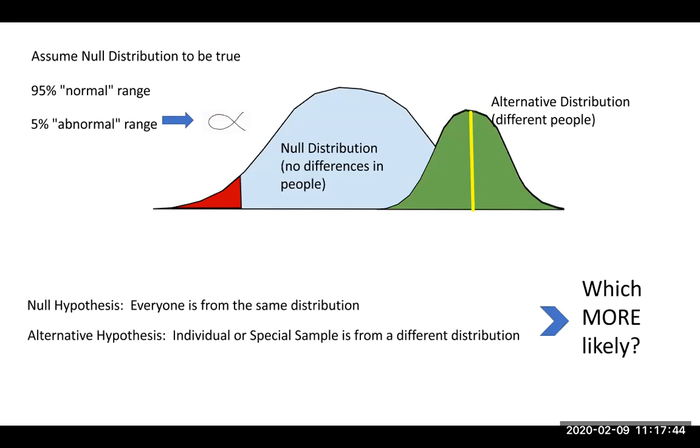So again, what I would like you to take away is that we're looking at your score and we're trying to decide is this score more likely to have come from this distribution and you're just more rare? Or is it more likely that you're just a smack average green distribution person? That's our job. And so what we have decided to do as a field is if your score falls in that red zone, we will be comfortable saying you're from the green distribution. You're more likely to have come from the green distribution than the blue distribution.